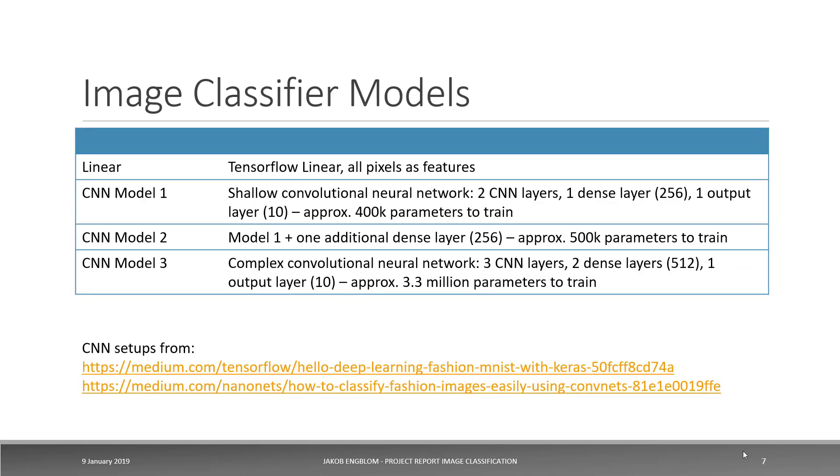I used four different image classifiers: a basic linear model like TensorFlow linear with all pixels as the features, and I used three different CNN models. I took model one and model three from existing examples available on the web, and CNN model two is a variant of CNN model one. CNN model three is by far the most complex of these, featuring about 3.3 million parameters with three CNN layers and two dense layers, while model one has only one tenth the number of parameters from two CNN layers and one dense layer.